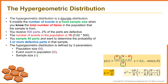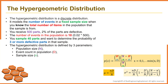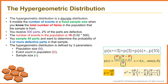The hypergeometric distribution is defined by three parameters: population size N, event count in population d, and sample size n. In this example, capital N is 500, the number of defective items in the population is 10, and sample size is 40. We are looking for three or more defective parts, so x could be 3, 4, or up to 10 defective parts at most. Just plug in these numbers into the equation and find the cumulative probability — the summation of P(3), P(4), P(5), through P(10).